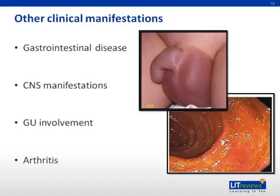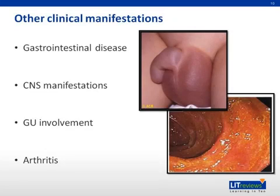Other less common manifestations of HSP include orchitis, carditis, inflammatory eye disease, testicular torsion, and pulmonary hemorrhage.